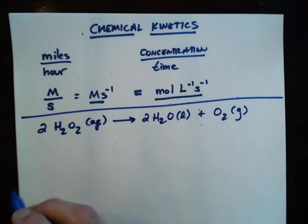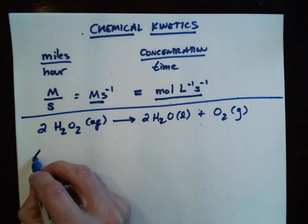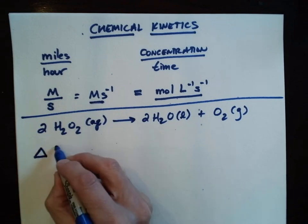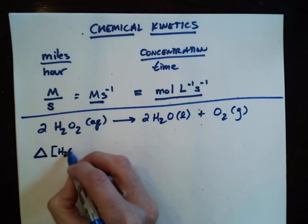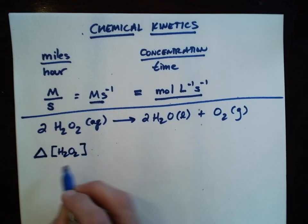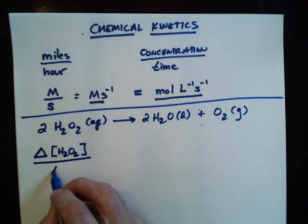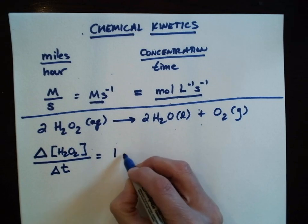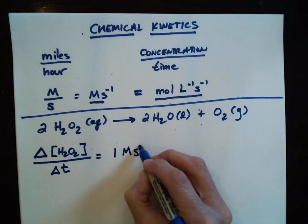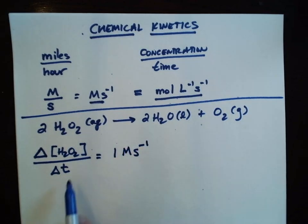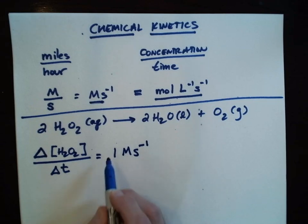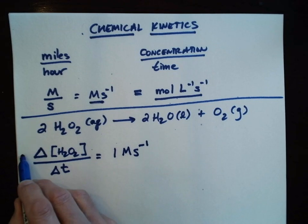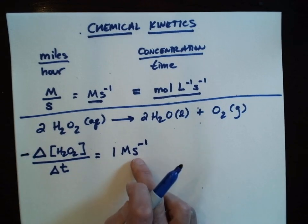The way I would write that is: the change in the concentration of hydrogen peroxide with the change in time is 1 molar per second. And because it's disappearing, we put a negative sign on this, since this is the rate at which the compound is disappearing.